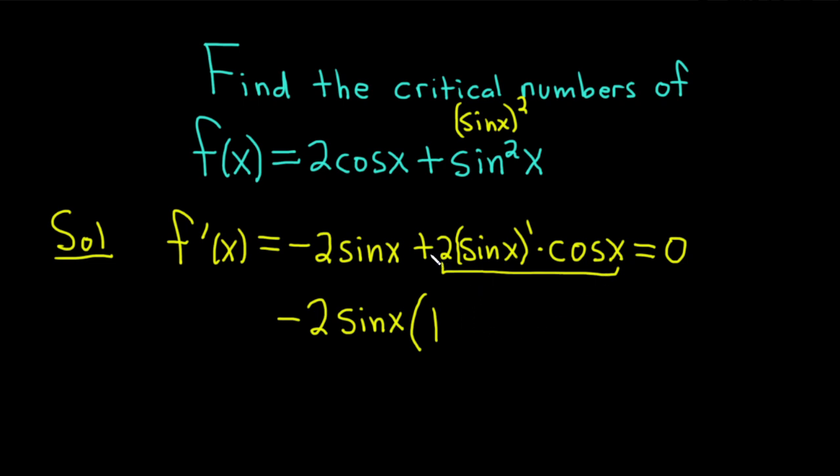Well, we're going to need a minus because we want a plus. So minus, and then we already have the 2 sine x, so we just need the cosine x. Beautiful. And this is equal to 0.